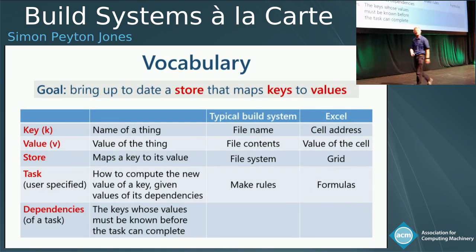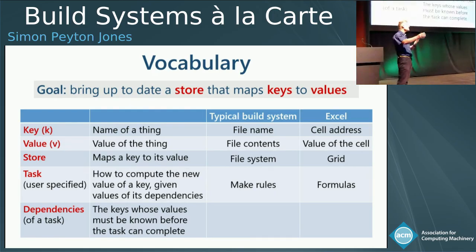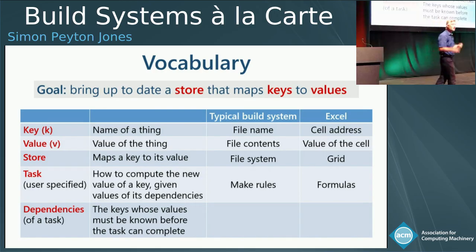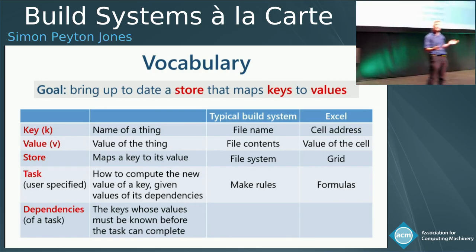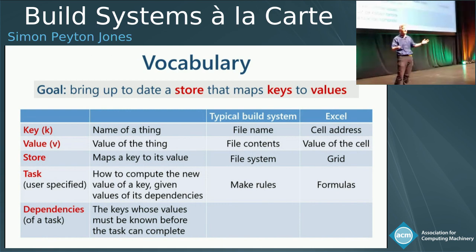First, let me establish some vocabulary. What is a build system? It brings up to date a store that maps keys to values. Keys are the names of things — in a typical build system, a key is a file name, a value is the file content, the store is the file system. The task, which is user-specified, says how to bring a key up to date — those would be the make rules.